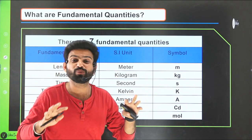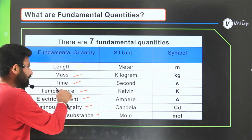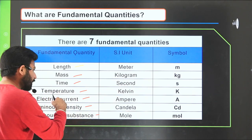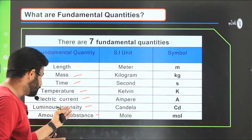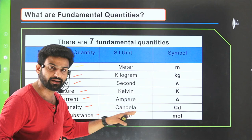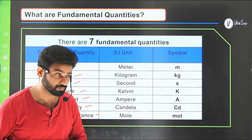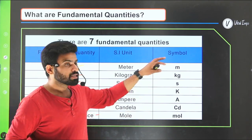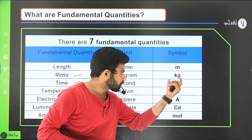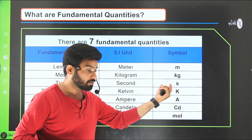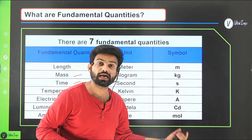The standard units of the seven fundamental quantities are: length — meter; mass — kilogram; time — second; temperature — Kelvin; electric current — ampere; luminous intensity — candela; and amount of substance — mole. Their symbols are m, kg, s, K, A, cd, and mol respectively.